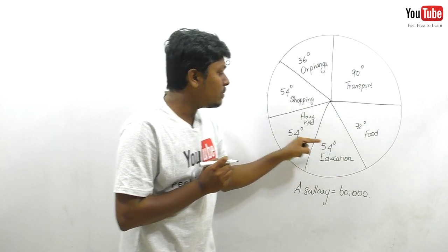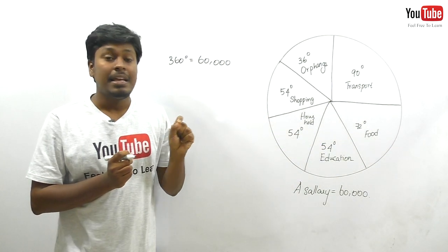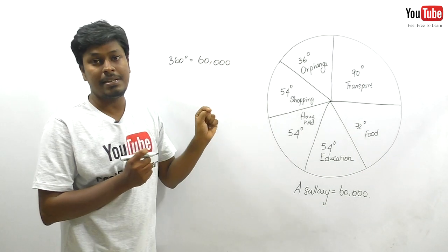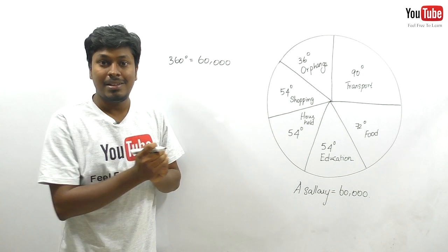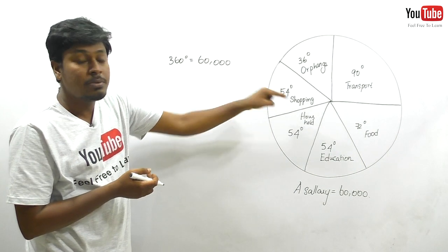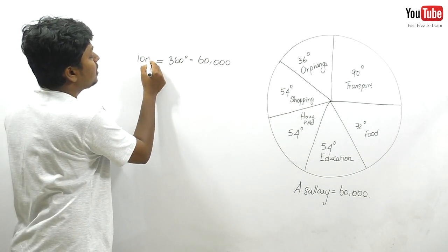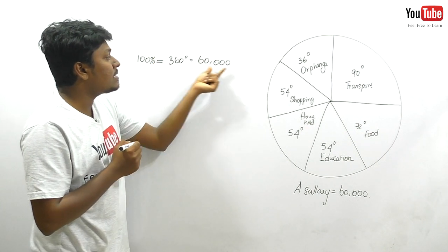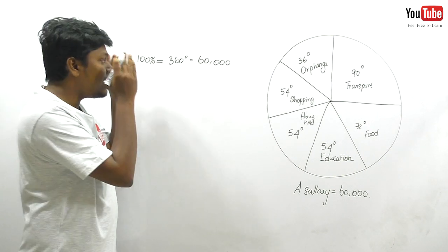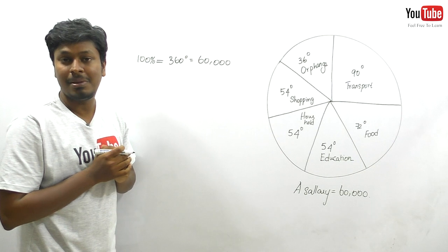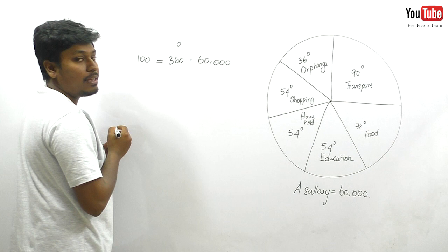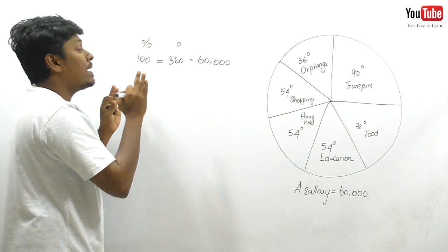If we convert all the degrees into percentages, 360 degrees becomes 100%. Since 360 degrees equals 60,000, we can also say 100% equals 60,000. Don't waste time using unnecessary formulas in your exam. Instead, just spend 30 seconds building a reference table linking degrees to percentages and amounts.